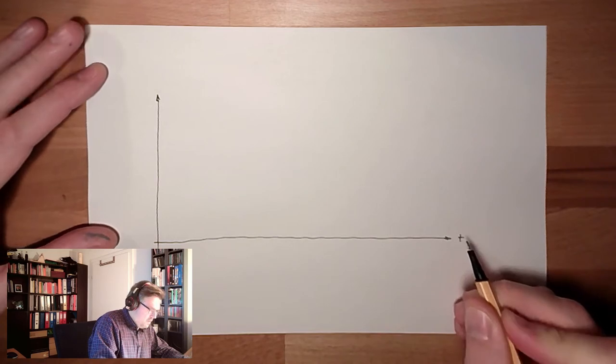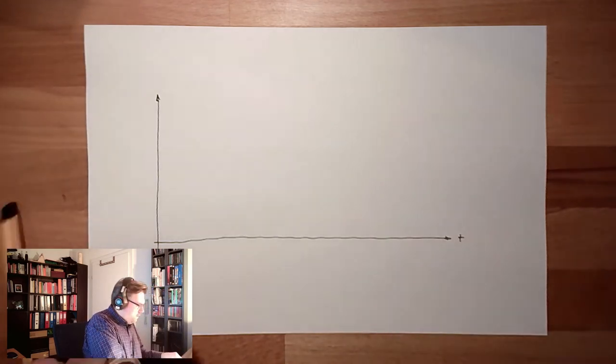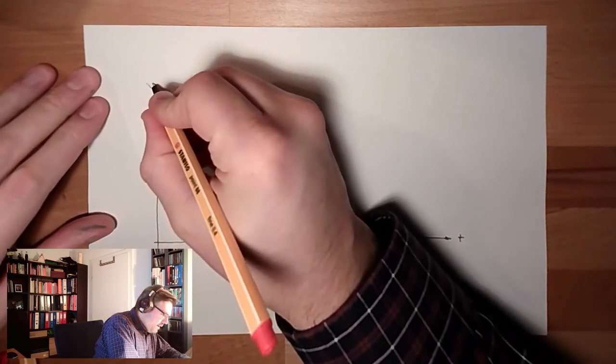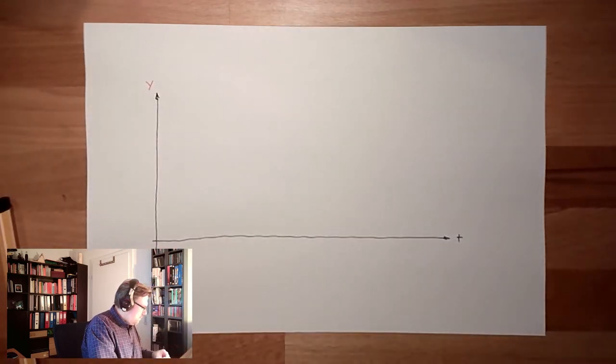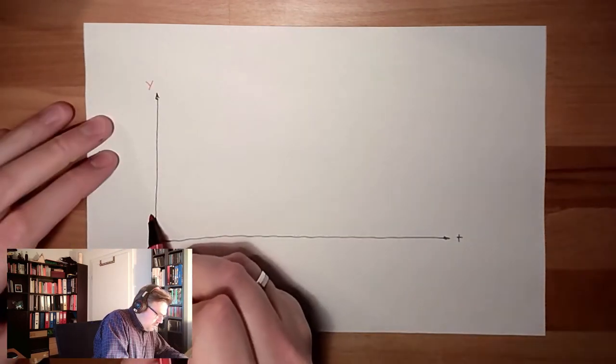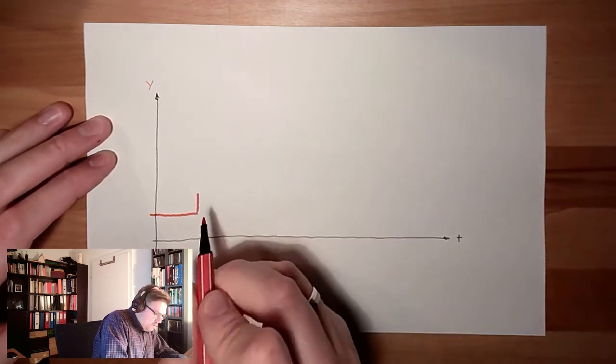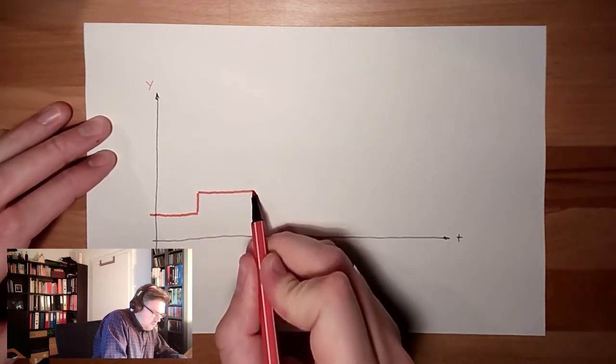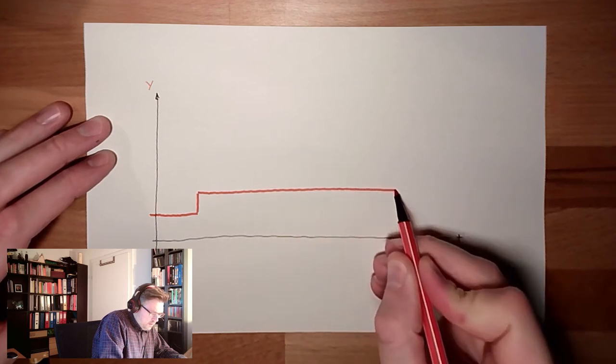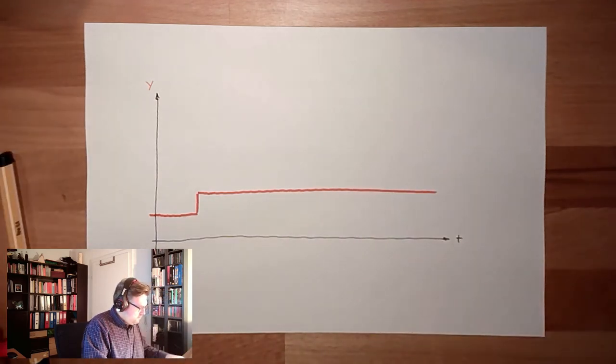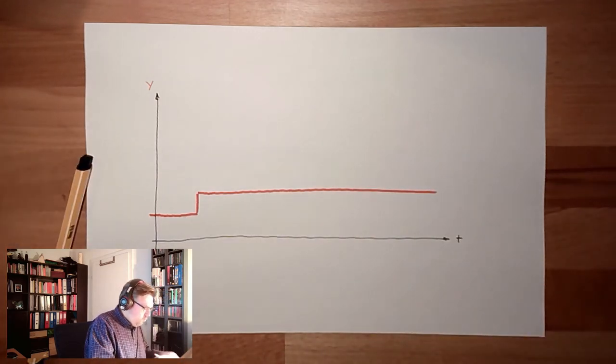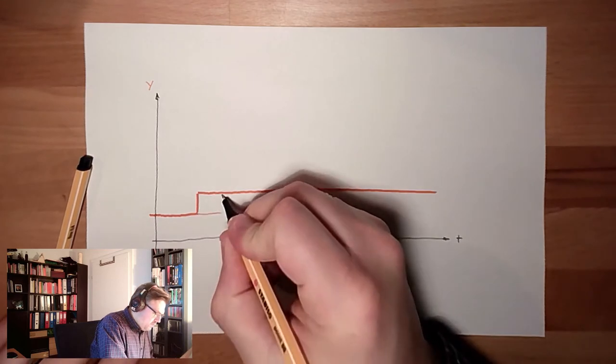So here's the time, and here's the correcting variable y. At a certain point, this will stay constant. At a certain point in time, we make a change in the correcting variable to analyze the system. This change will have a certain height.